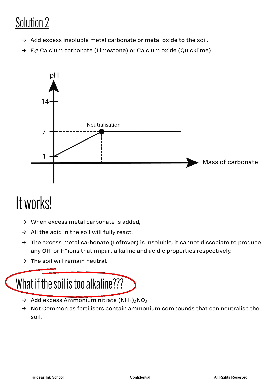But what if the soil is too alkaline instead? This problem seldom arises because fertilizers often contain ammonium compounds like ammonium nitrate, and ammonium compounds can react with any alkali present in the soil to produce a salt, ammonia gas, and water, thus neutralizing the soil in the process.